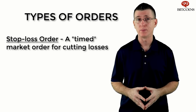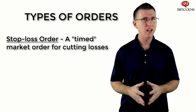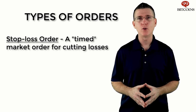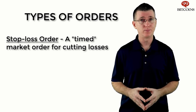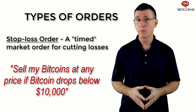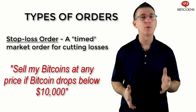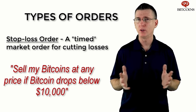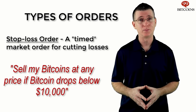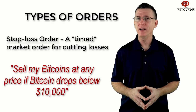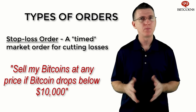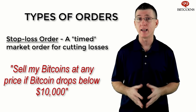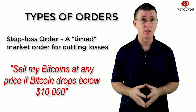A stop loss order lets you set a specific price that you want to sell at in the future, in case the price dramatically drops. This type of order is useful for minimizing losses. It's basically an order that tells the exchange: if the price drops by a certain percentage or to a certain level, I will sell my Bitcoins at the preset price so I will lose as little money as possible. A stop loss order acts like a market order — once the stop price is reached, the market will start selling your coins at any price until the order is fulfilled.